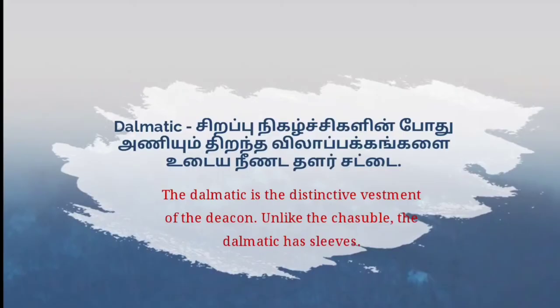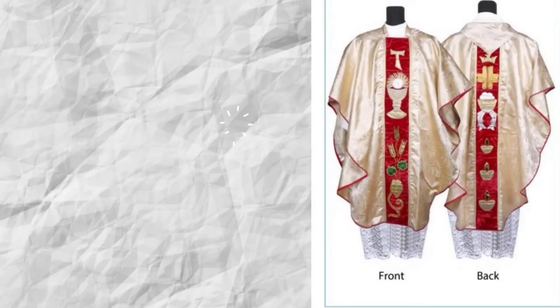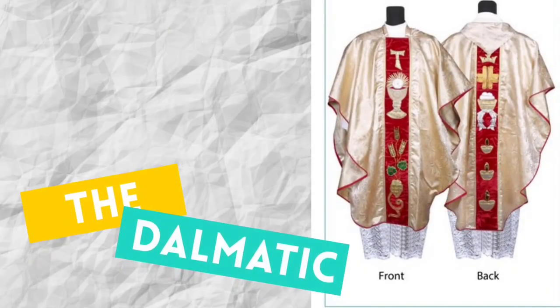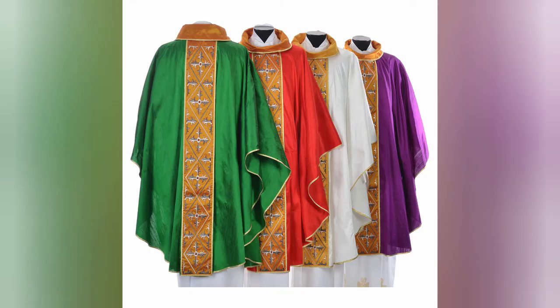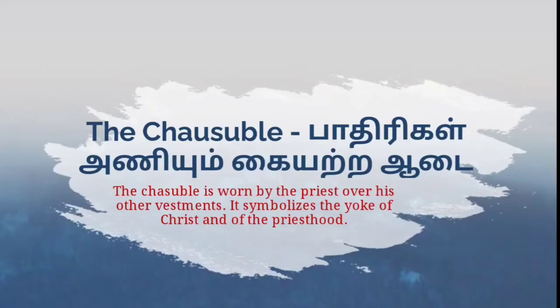The dalmatic is a vestment of the deacon. Unlike the chasuble, the dalmatic has sleeves — and that's called the dalmatic. The chasuble is worn by the priest over his other vestments; it symbolizes the yoke of Christ and of the priesthood — and that's the chasuble.